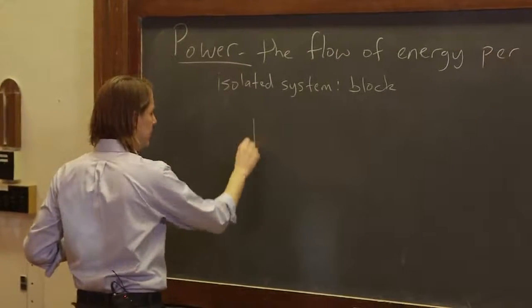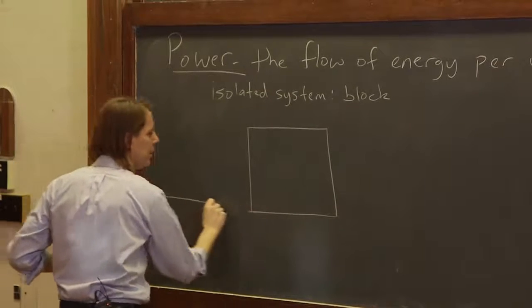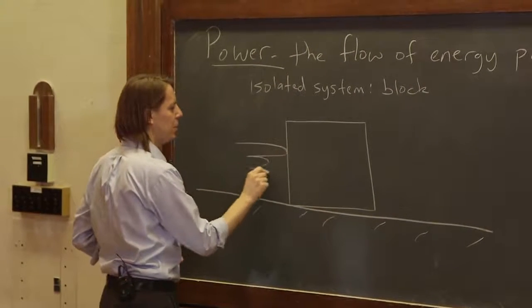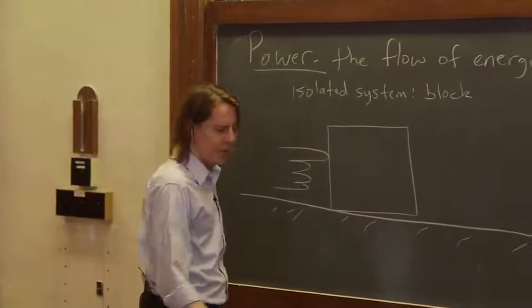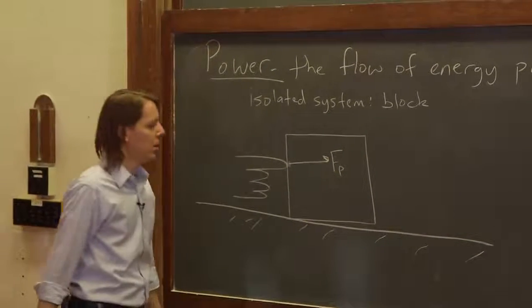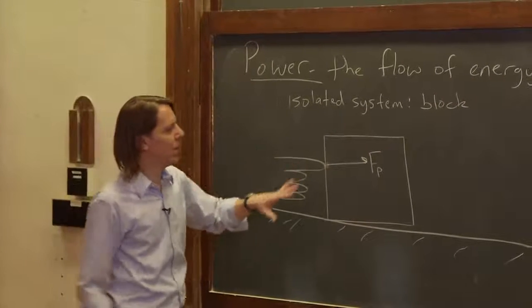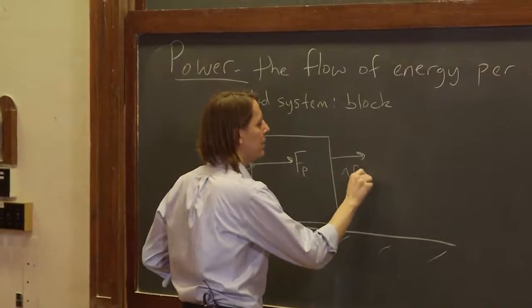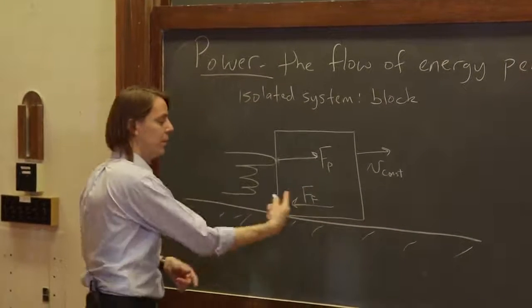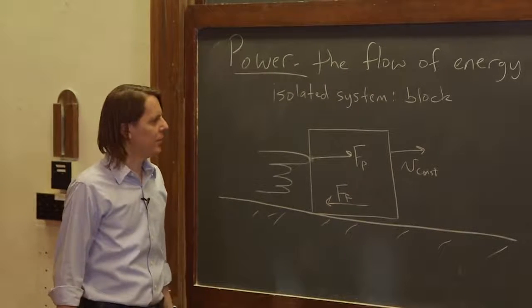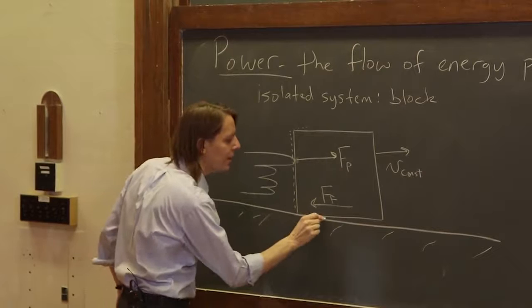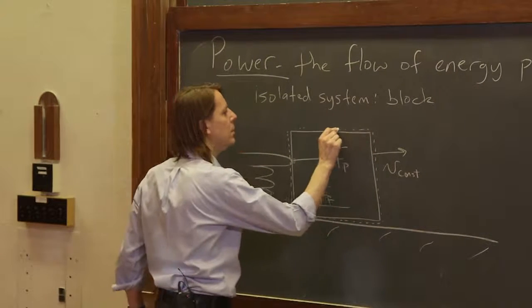So let's draw this block nice and big here. There's the block, there's the bench. We had finger pushing, applying a pushing force Fp on the block. And we also know that the reason we can go to constant velocity, the block is going at V constant, because there's a balancing force back. There's a friction force the same size that the bench is applying to the block. Now, we said the isolated system is just the block. So let's draw a little isolated system barrier just like that. It's not the table, it's not the finger, just the block.